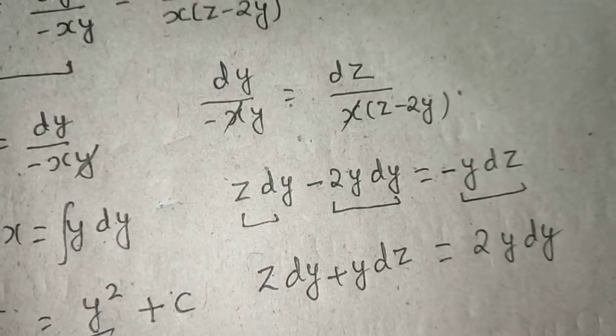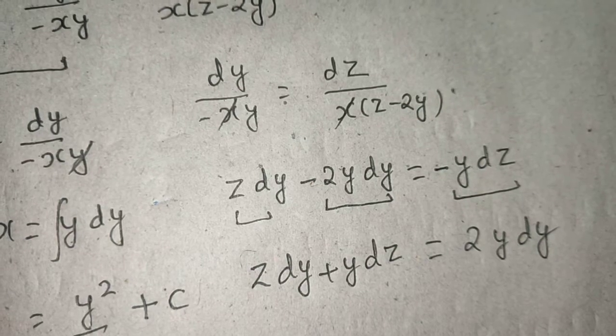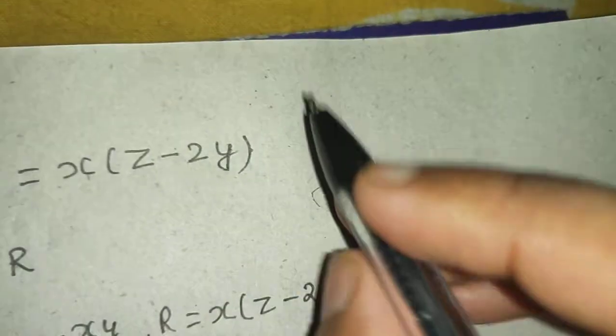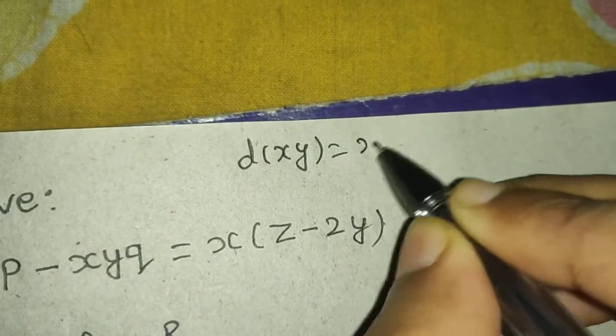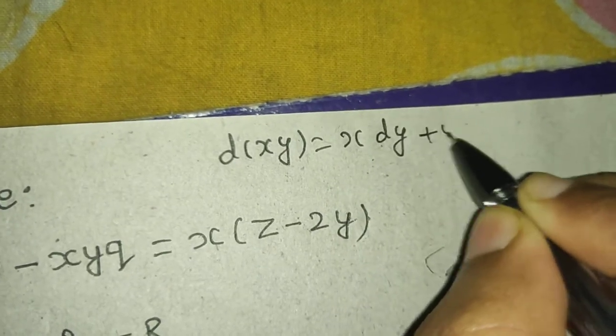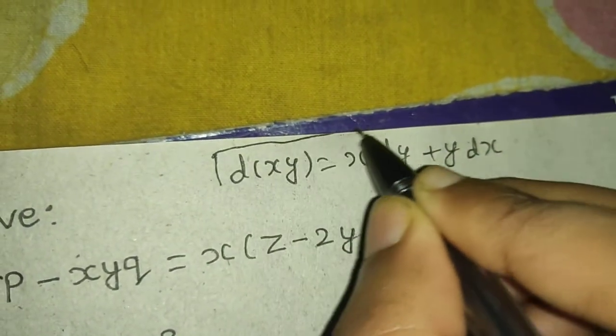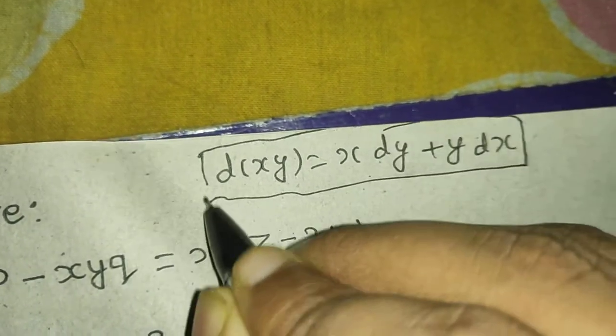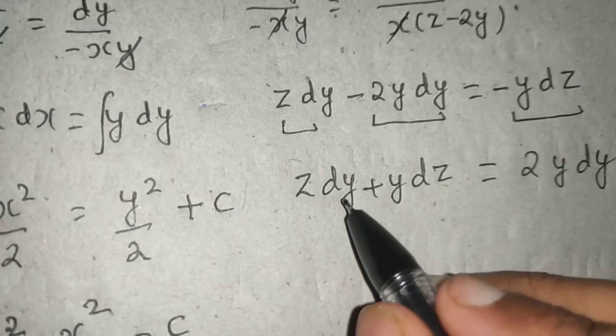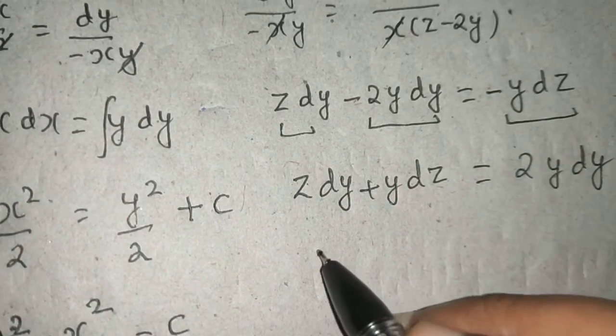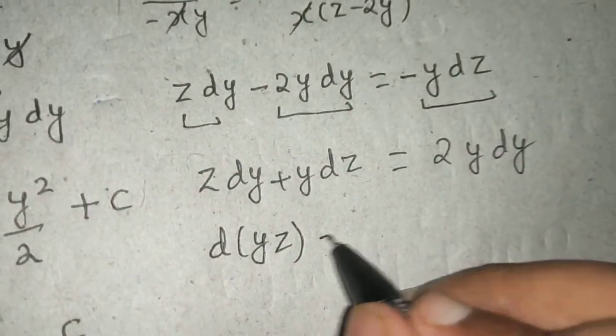You know one formula that we have: d(xy) is x as it is, derivative of y is dy, plus y as it is, derivative of x is dx. This is a very important formula. We'll use the same here: z as it is, derivative of y which is dy, plus y as it is, derivative of z. This is nothing but derivative of yz equals to 2y dy.